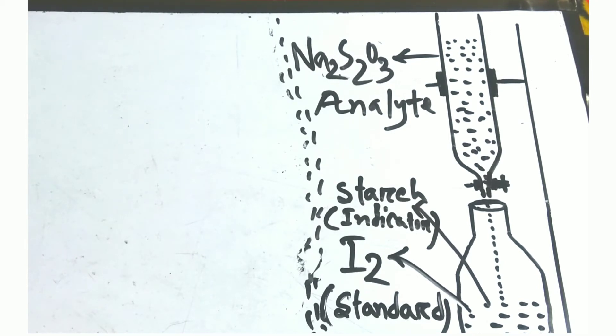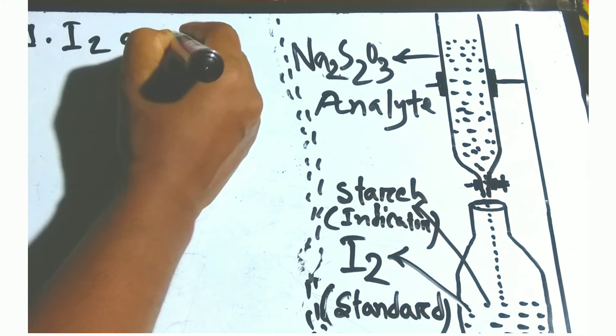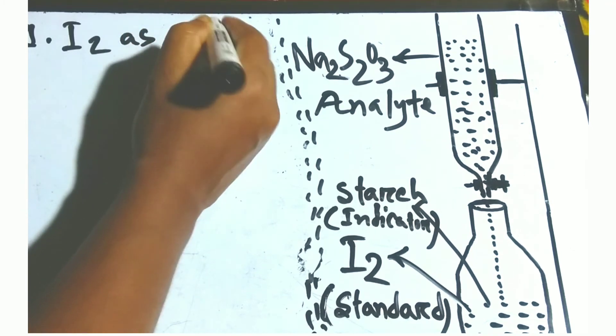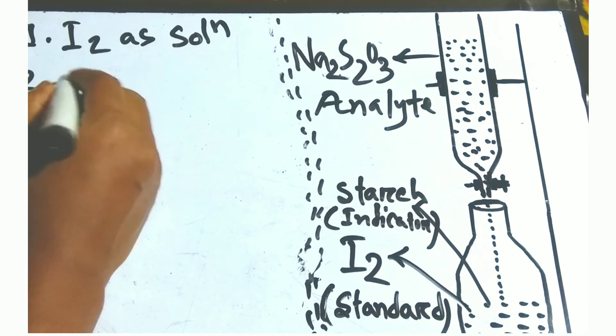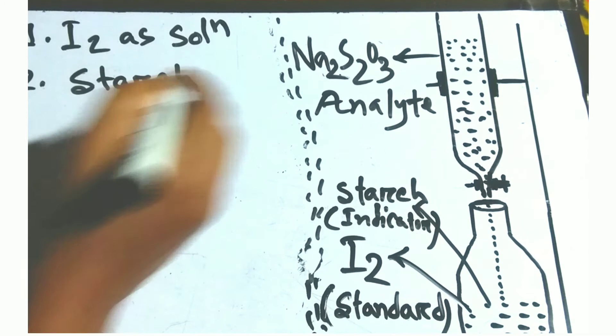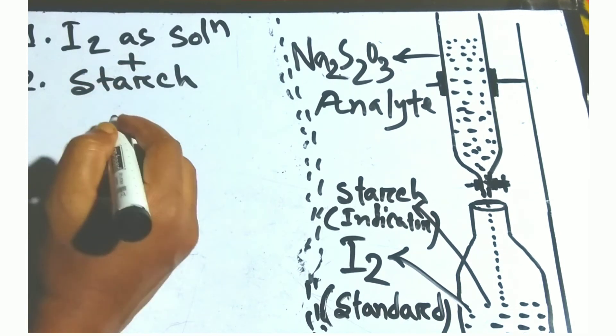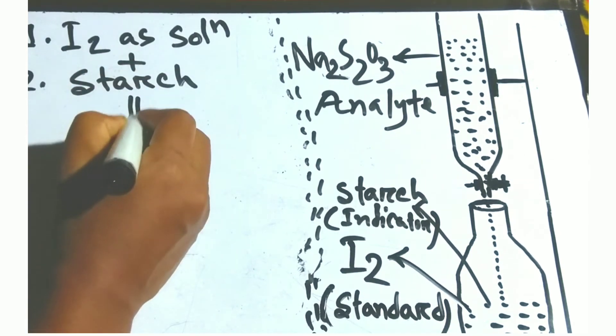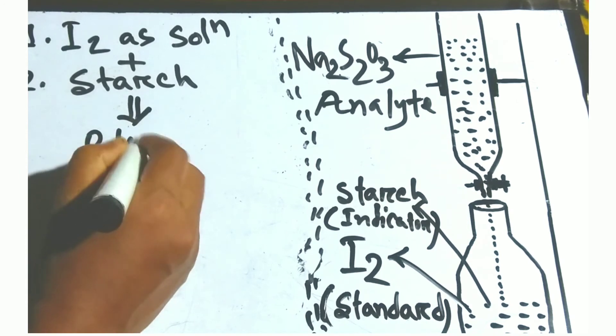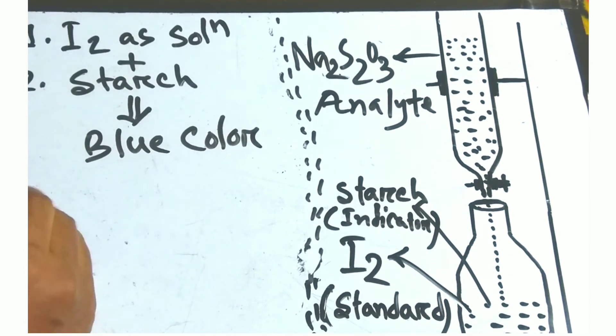What happens when we do titration? First, we add iodine solution and in the solution we add starch as an indicator. When iodine and starch are added to the solution, the solution turns blue.